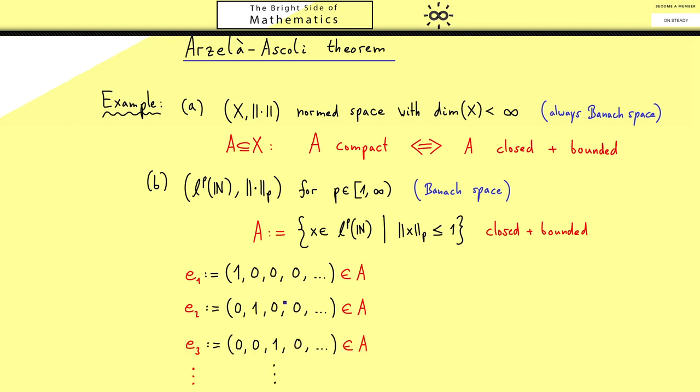Now we can forget for a moment that a vector looks like this and just consider the sequence of vectors. This means that we now have one chosen sequence in A. Of course the question we should ask here is can this sequence have a convergent subsequence? The answer is indeed no because we can easily calculate the distance between two members of the sequence. It would be zero if n is equal to m. So let's calculate the whole thing for n unequal to m.